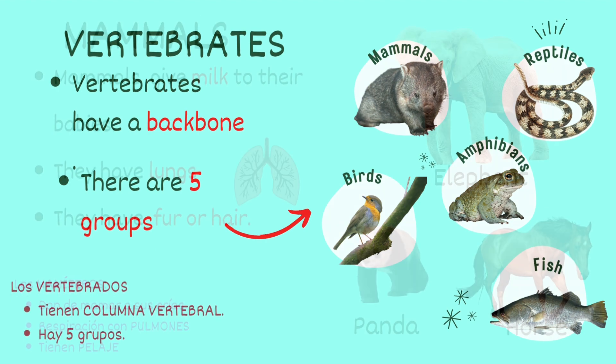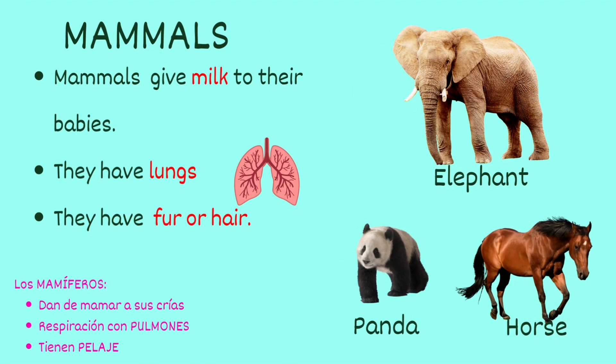Let's have a look at the first one. Mammals give milk to their babies. They have lungs and they have fur or hair.